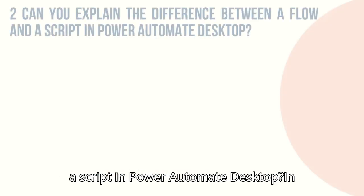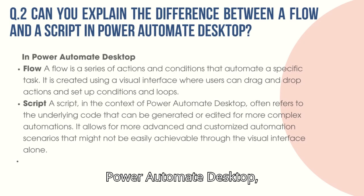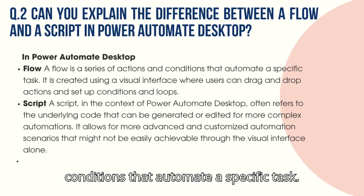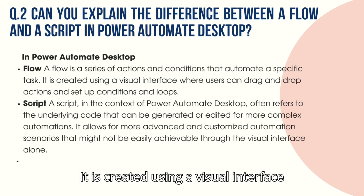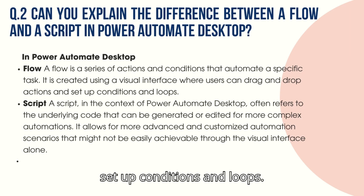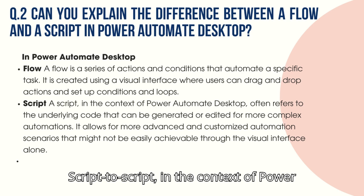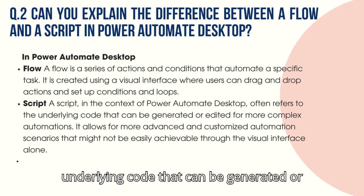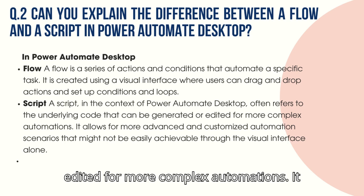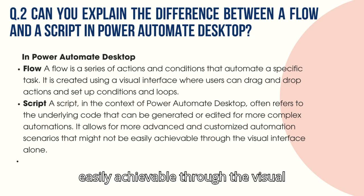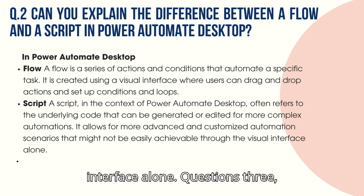Question 2: Can you explain the difference between a flow and a script in Power Automate Desktop? In Power Automate Desktop, a flow is a series of actions and conditions that automate a specific task, created using a visual interface where users can drag and drop actions and set up conditions and loops. A script refers to the underlying code that can be generated or edited for more complex automations, allowing for more advanced and customized automation scenarios that might not be easily achievable through the visual interface alone.